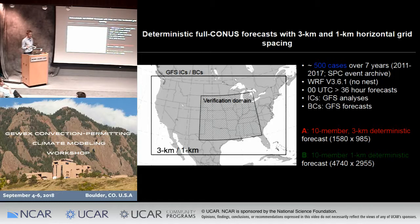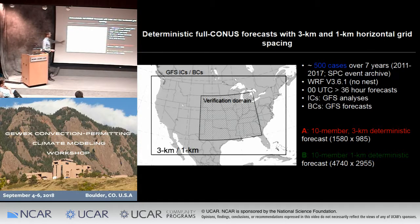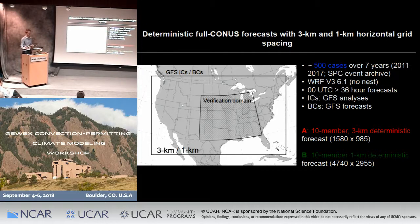To look at differences in cool season skill and skill for different types of severe hazards at higher resolution, we conducted an experiment looking at 500 different severe weather events over a seven-year period, running full CONUS simulations initialized with GFS at three-kilometer and one-kilometer horizontal grid spacing. The goal is to tease out differences in skill in the cool season, as well as the added value of one-kilometer grid spacing for one-to-three-day weather forecasts.